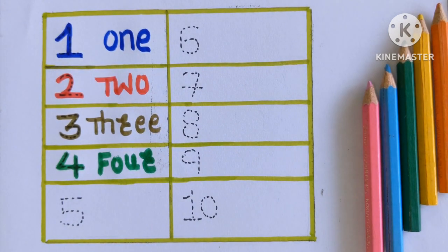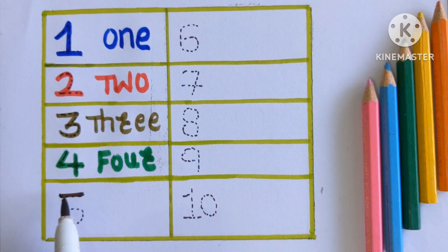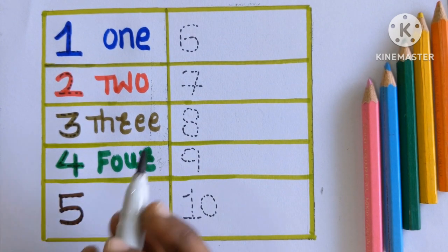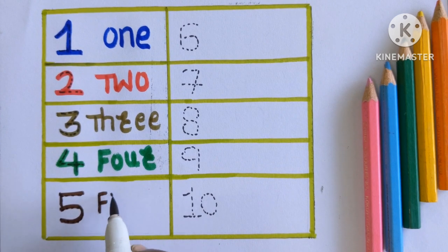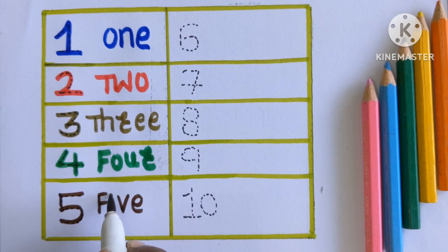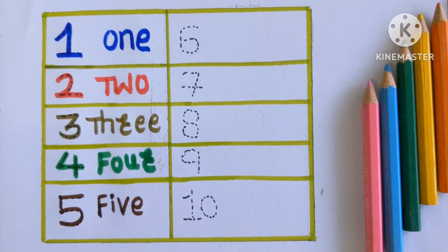After 4, which number is this? Number 5. Number 5. F-I-V-E. 5 with a brown color.